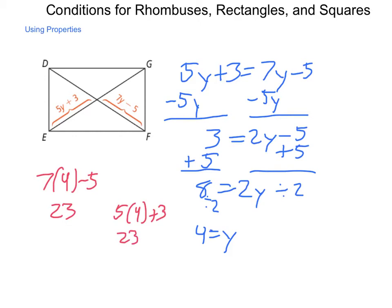So these segments of the diagonals are congruent at 23. The other halves would be 23 also, making the full diagonals 46 in total.